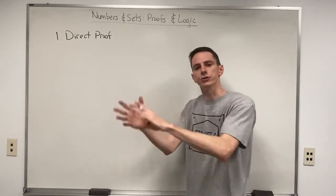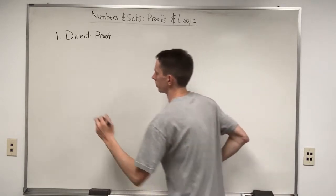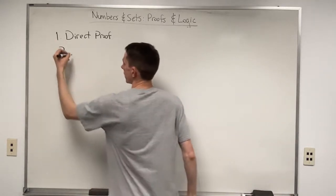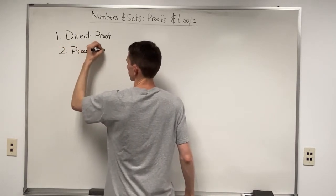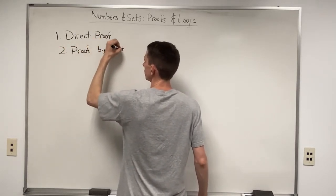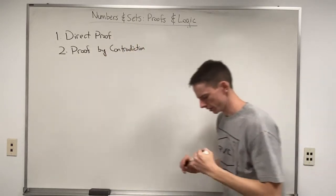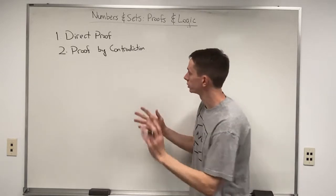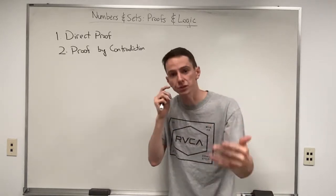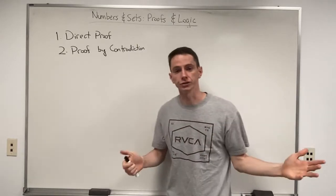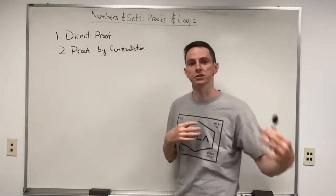That's the standard, straightforward way of proving things. We also had the proof by contradiction. The idea behind the proof by contradiction is that you essentially try to disprove the opposite of the original statement, and if you could disprove the opposite, that was just another way of proving the statement itself.